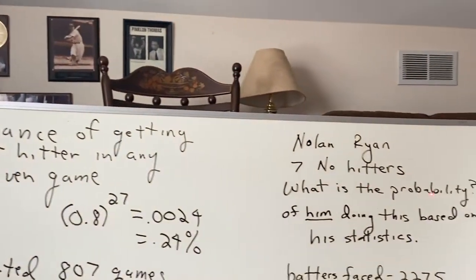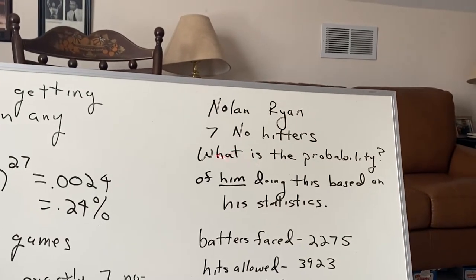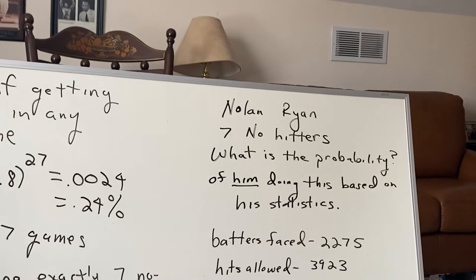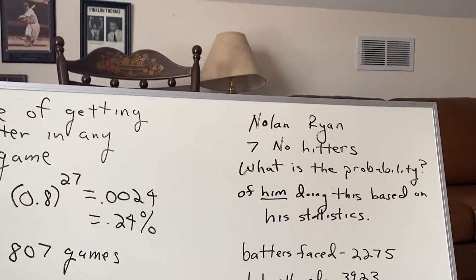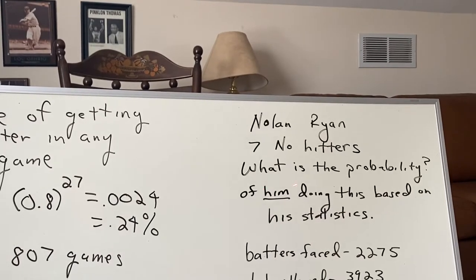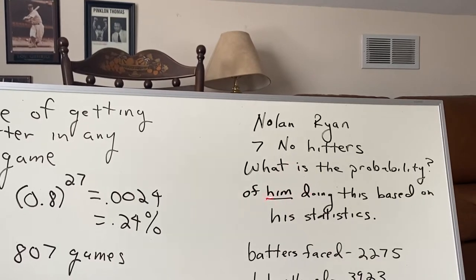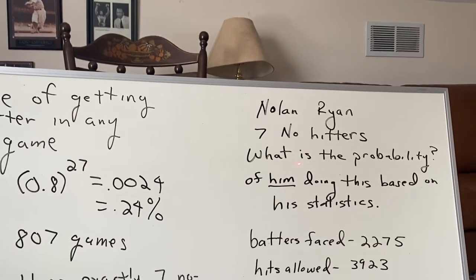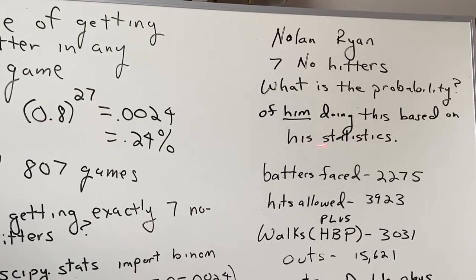We're going to ask the probability of Ryan getting seven no-hitters. Now it's very important when you ask a probability question, what your assumptions are. For example, we may ask the question under the assumption of anybody pitching seven no-hitters. Well, that's really a different question than Ryan pitching seven no-hitters based on his own statistics.